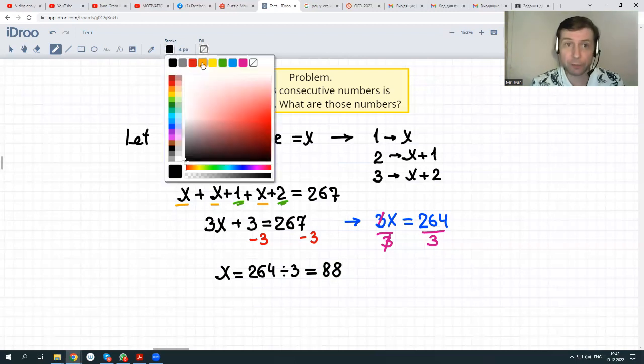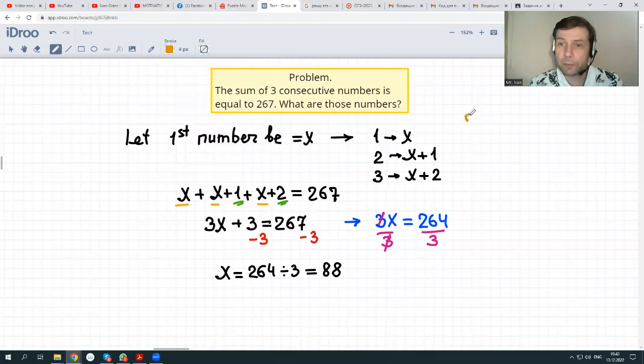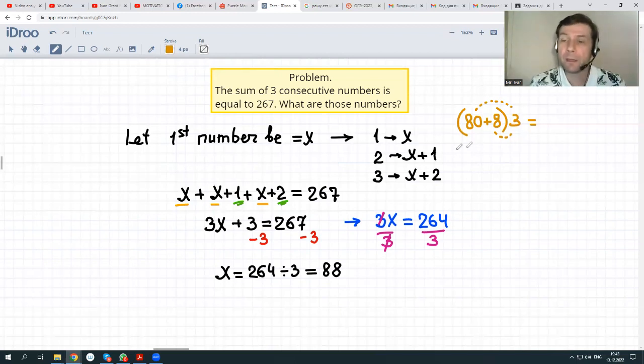We could check if it's correct or not. If 88 we write as 80 plus 8 and multiply it by 3. I have written it in this kind of shape because it's easier to multiply 80 by 3 and 8 by 3 than to multiply right away 88. 80 times 3 is 240. 8 times 3 is 24. And eventually, we have exactly 264. Correct.